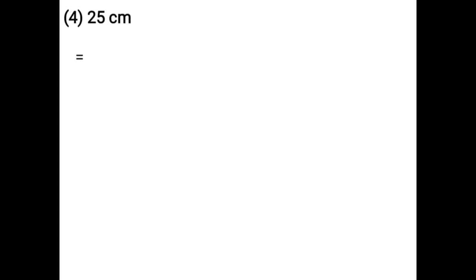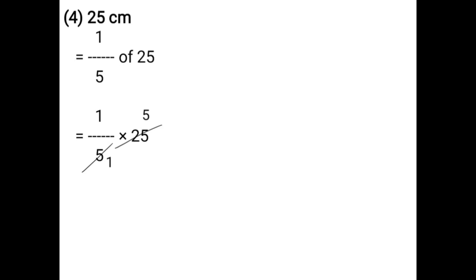25 centimeters. That is equal to 1 upon 5 of 25, that is equal to 1 upon 5 into 25. Using the cancellation method: 5 ones are 5, 5 fives are 25, 1 five is 5. That is equal to 5 centimeters.